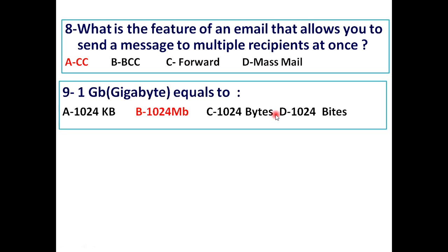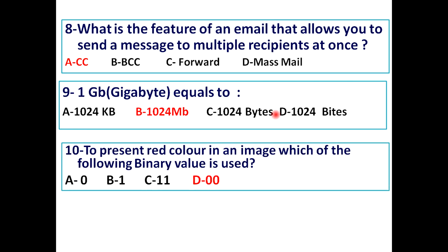1 GB gigabyte equals to: A - 1024 KB, B - 1024 MB, C - 1024 bytes, and D - 1024 bits. So answer is B, 1024 MB. To present red color in an image, which of the following binary value is used? It's 0, 1, double 1, and double 0. The answer is double 0.